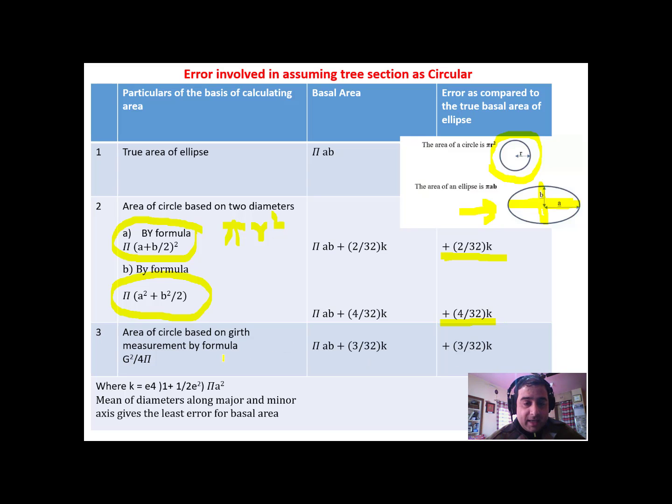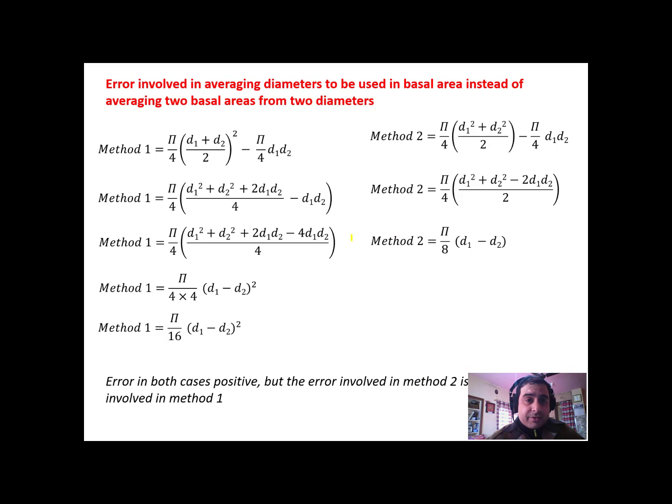And if you get your basal area using girth or circumference, then the error involved is in between the previous two methods, which is 3 upon 32. Now, how we have arrived at these figures, let's illustrate how the errors have been calculated in using these two methods.